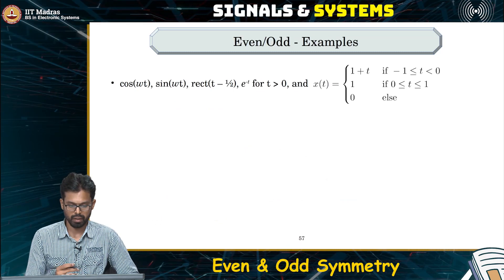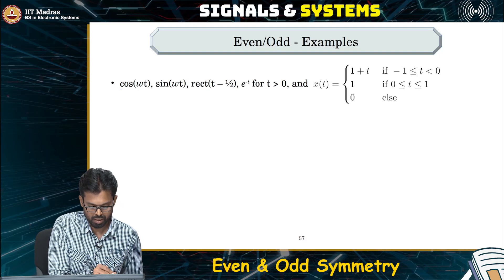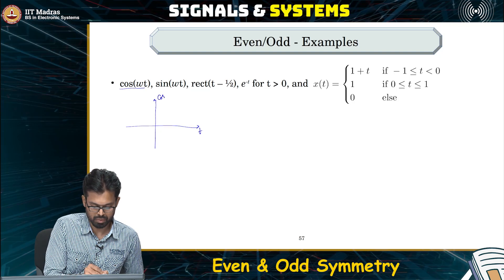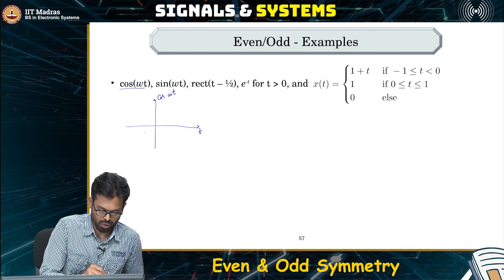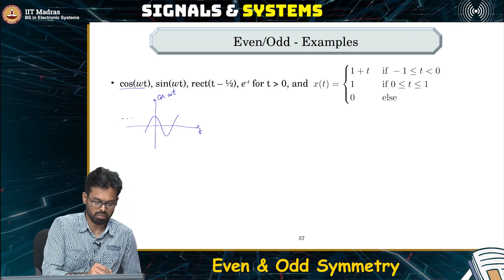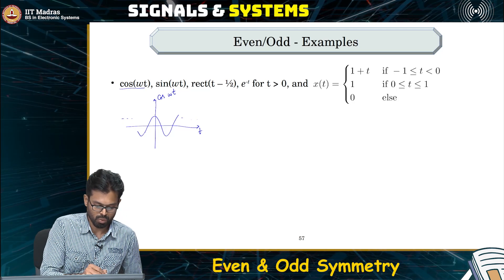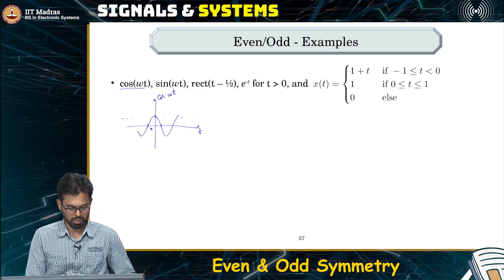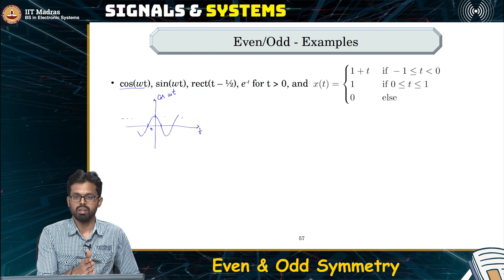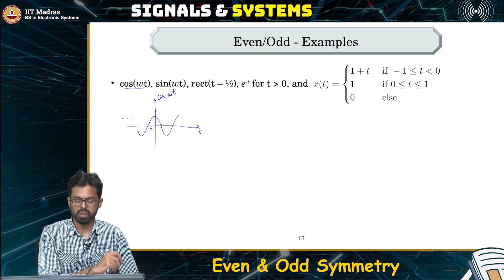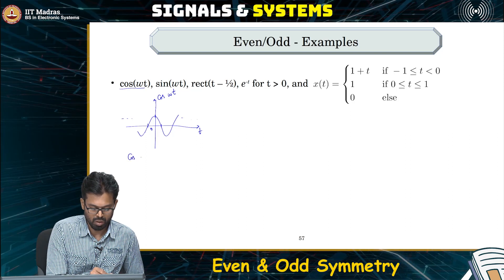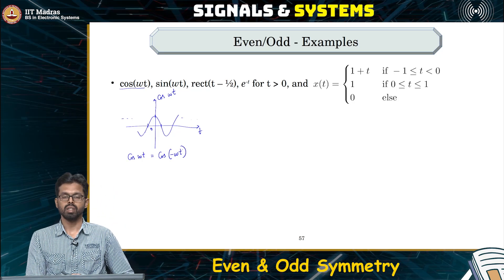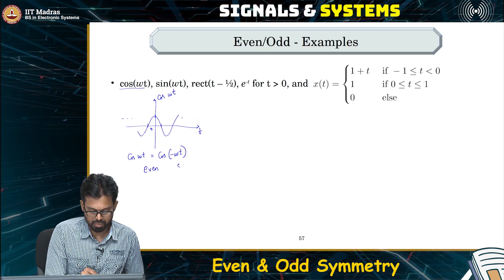Let us see some examples of even and odd signals. First, cos(ωt). If we plot cos(ωt), it attains its maximum at 0, and when ωt equals π/2 it becomes 0, and so on. This signal is symmetric about the y-axis — whatever you see on the right-hand side is the mirror image of whatever you see on the left-hand side. In other words, cos(ωt) = cos(−ωt), which satisfies our definition of evenness. So this is an even signal.